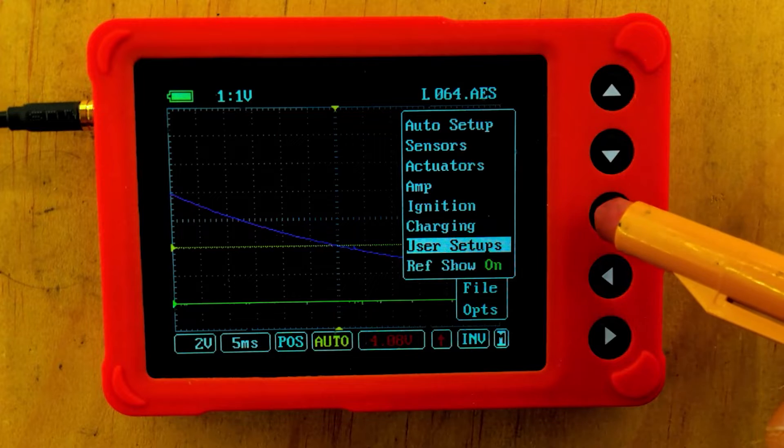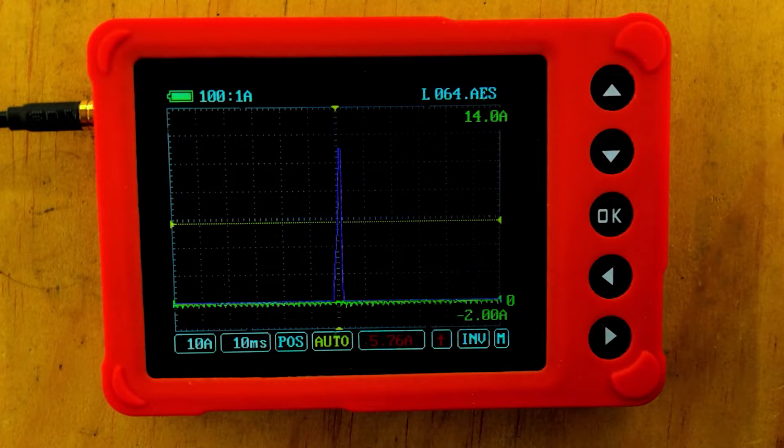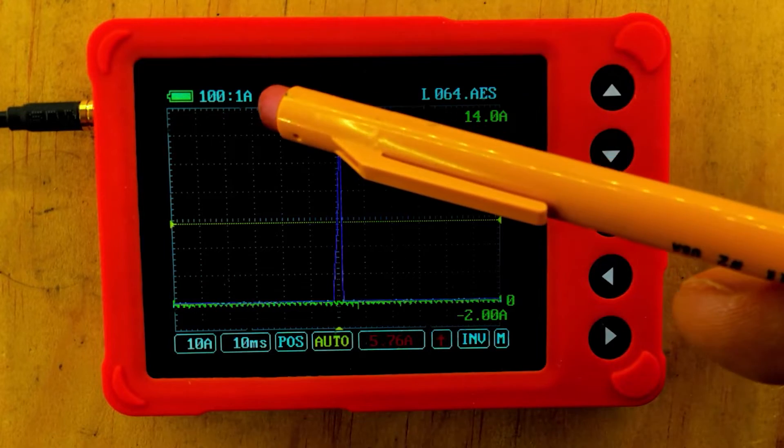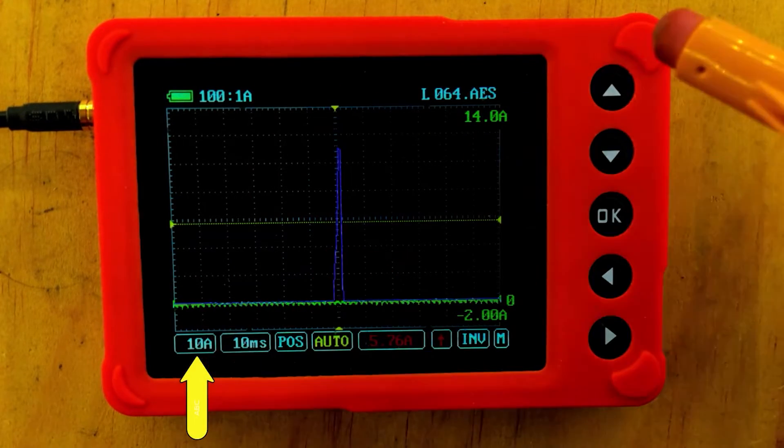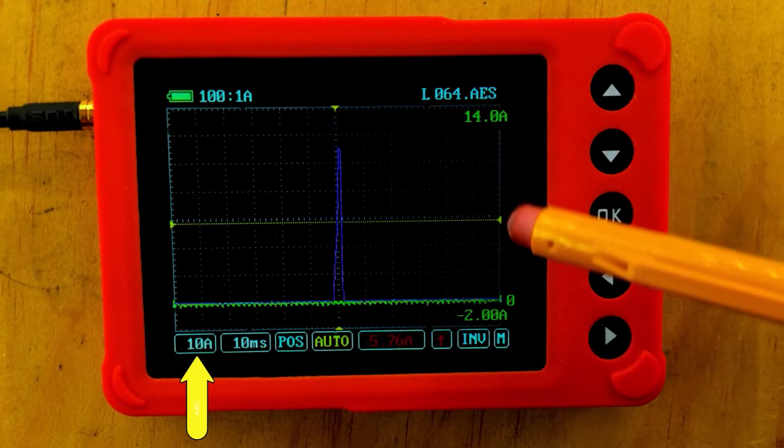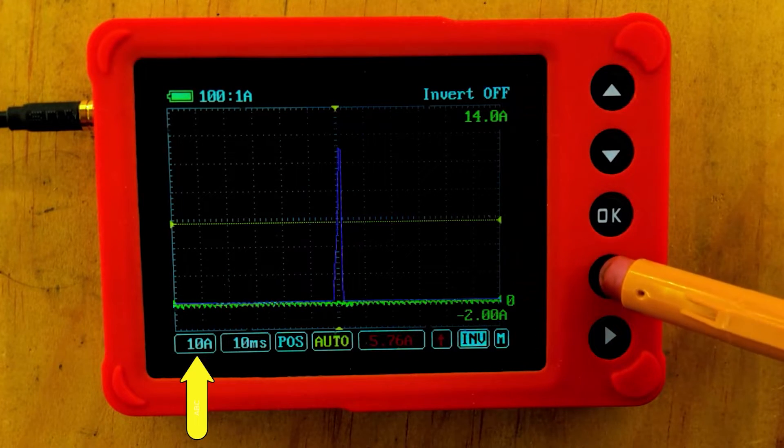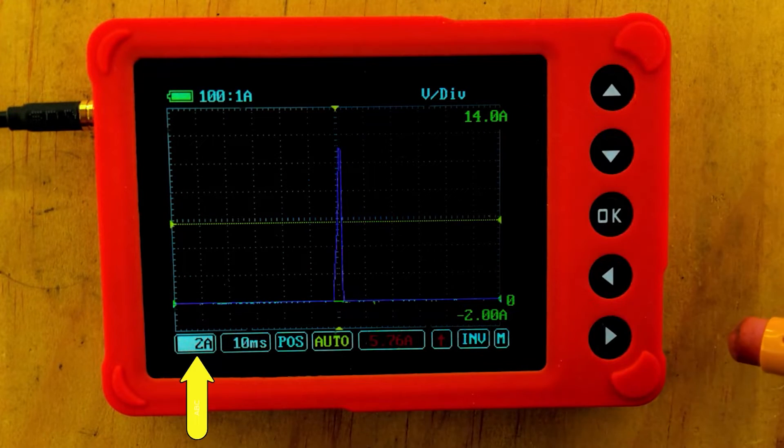Let's go to 64 and press and hold OK. There it is right there. I want to show you something. Every time I do an amperage preset where I'm using this 100 to 1, it comes up with 10 amps over here, but yet this is a 2 amp per division scale. So we do need to come back over and change this back down to 2 amps before we get started.